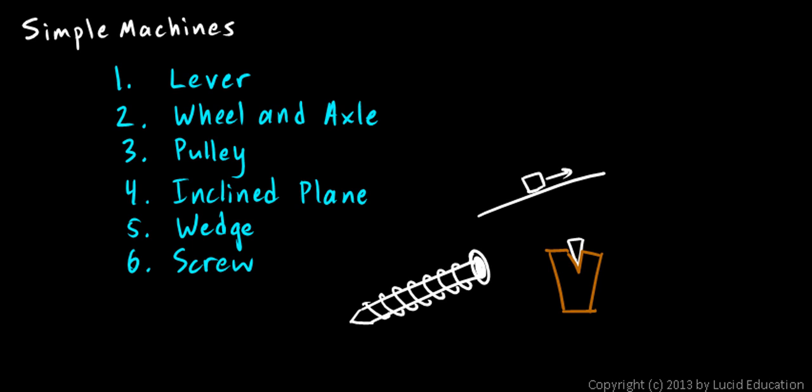So they would say they would stop the list right there after number four and say a wedge and a screw are really a type of incline.